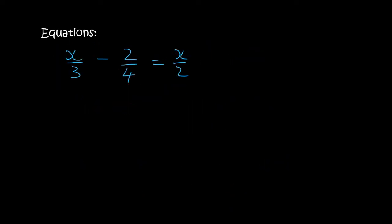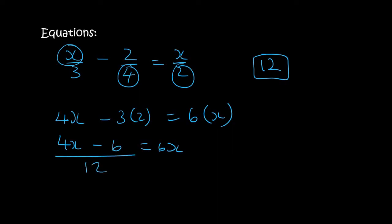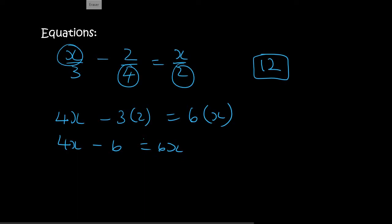Here's another one with fractions, so you need a common denominator. The common denominator for 3, 4, and 2 is 12. Multiply the first term by 4 to get 4x, the second by 3 to get 3 times 2, and the third by 6 to get 6x. That gives 4x minus 6 equals 6x. When working with equations, you are allowed to drop the denominators once they are all the same — you can ignore them.